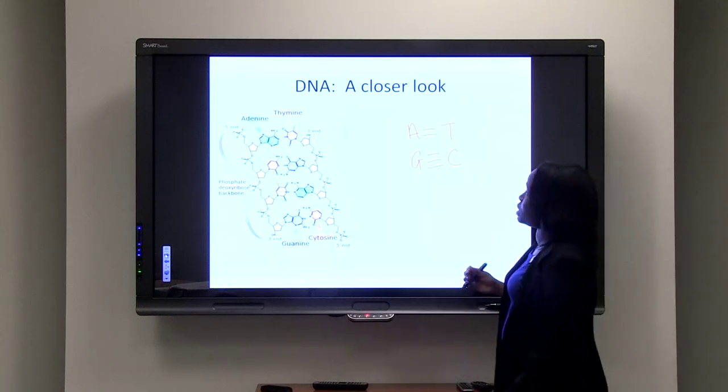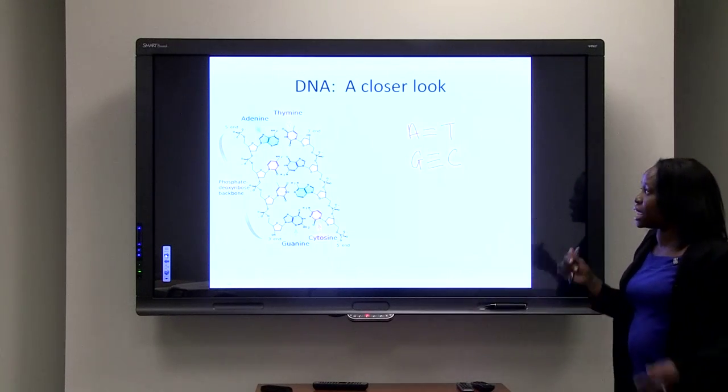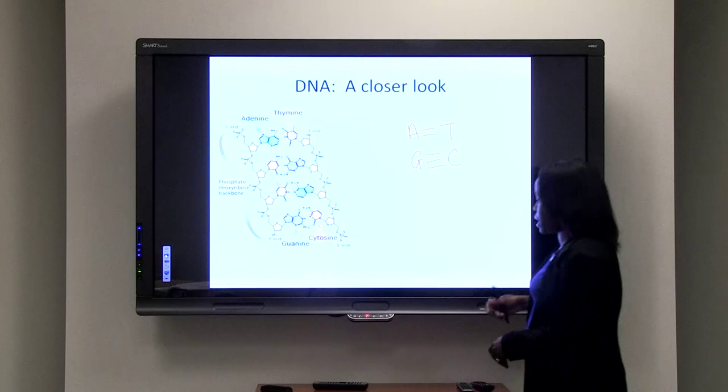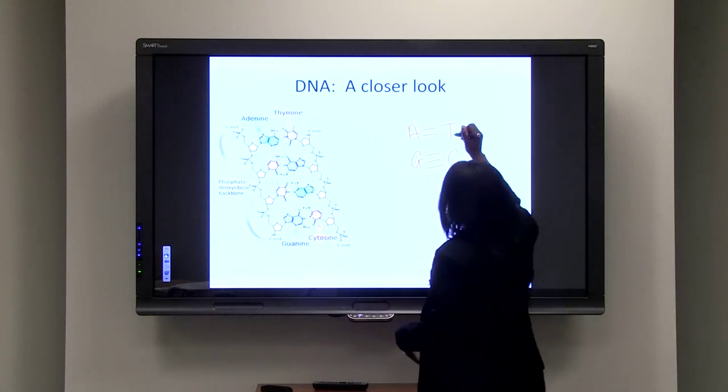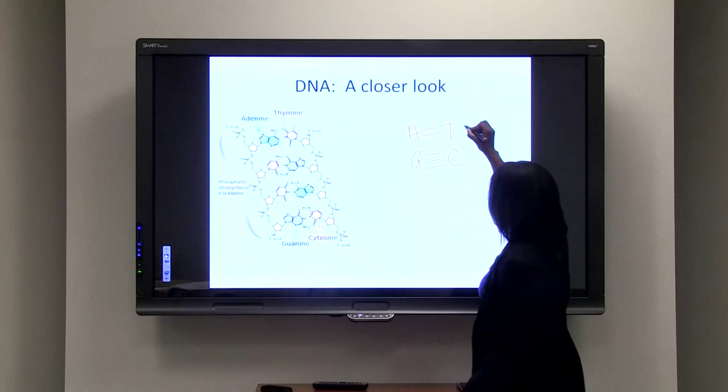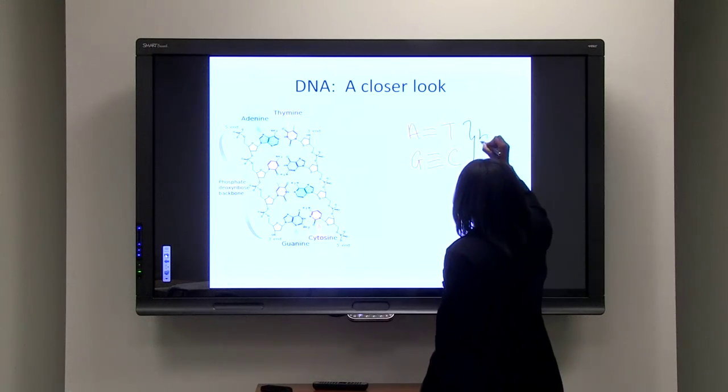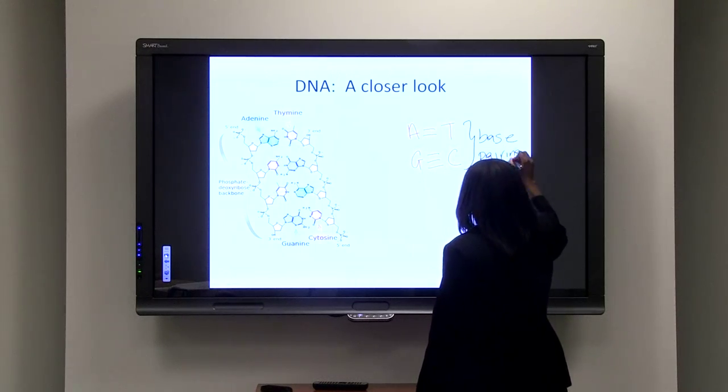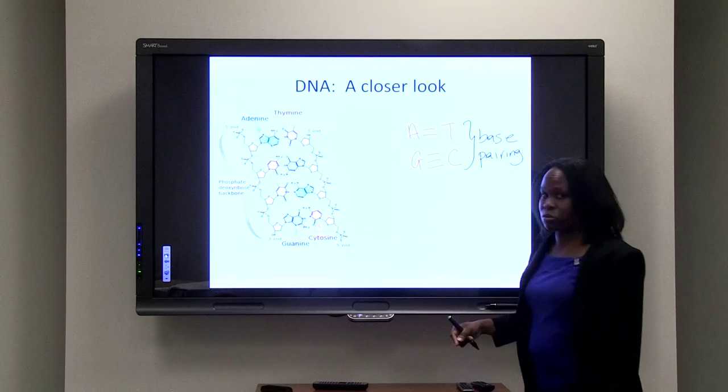So, what we learned is that adenine pairs with thymine and guanine pairs with cytosine. So, basically, the structure of DNA is held together because of these base pairs. So, the pairing of adenine and thymine and the pairing of guanine and cytosine are called base pairs.